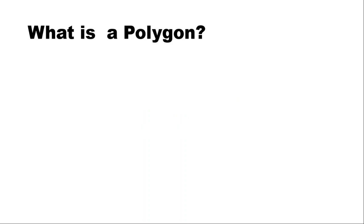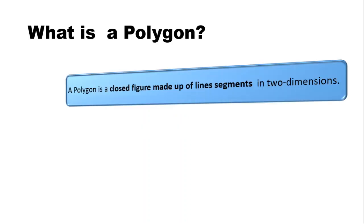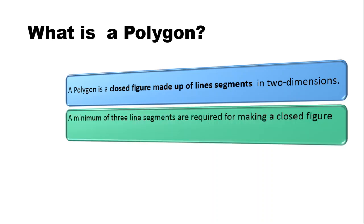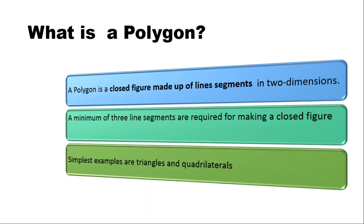Welcome to Technically Explained. This is geometry lesson 4 and in this lesson we are going to study polygons. A polygon is a closed figure made up of line segments in two dimensions. A minimum of three line segments are required for making a closed figure, so a polygon must have at least three sides.